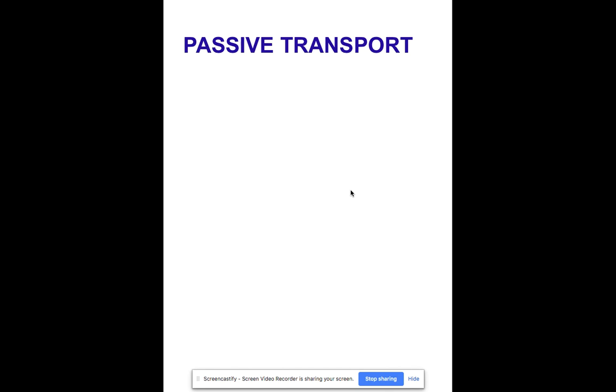Passive transport is when you have movement across a cell and it's passive. It doesn't really require any energy. It just happens all on its own. It doesn't require any energy. That's what this symbol is. Remember, this sigma means energy.